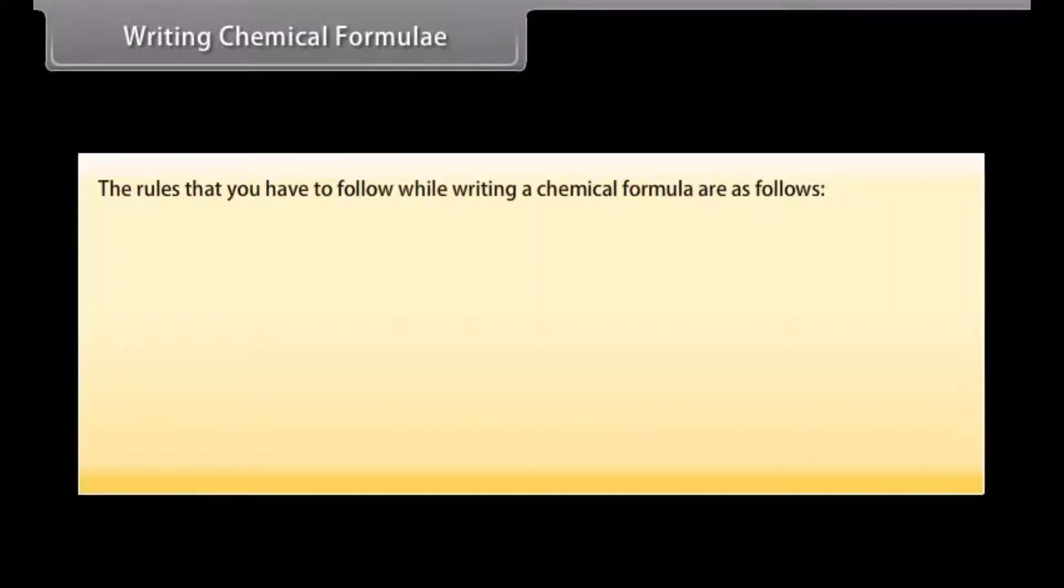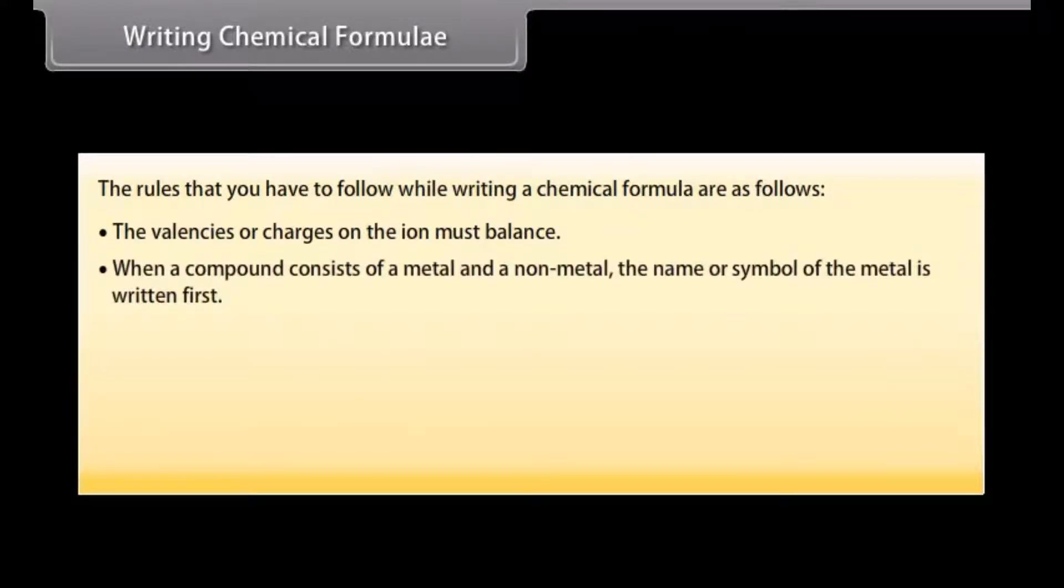The rules that you have to follow while writing a chemical formula are as follows: The valencies or charges on the ion must balance. When a compound consists of a metal and a non-metal, the name or symbol of the metal is written first.